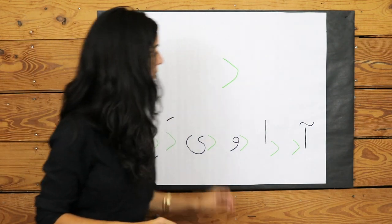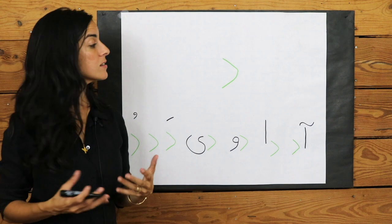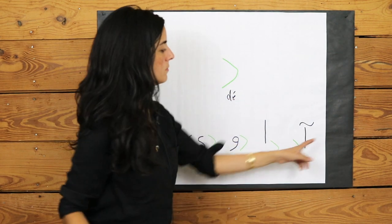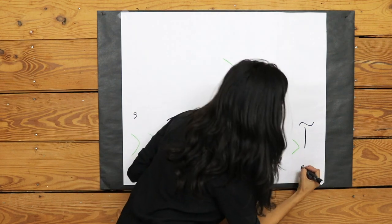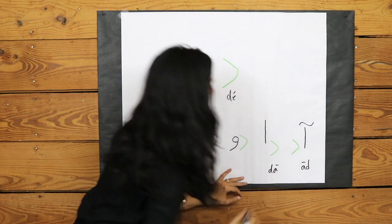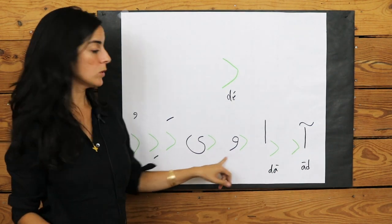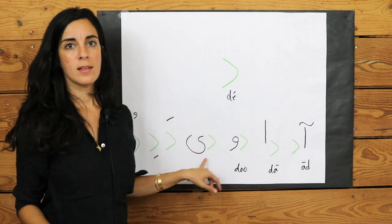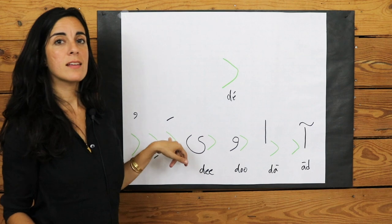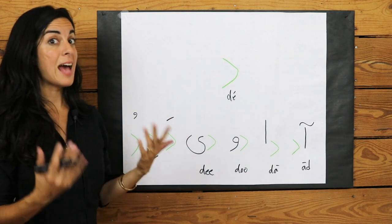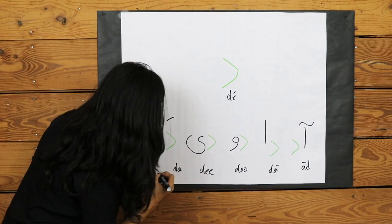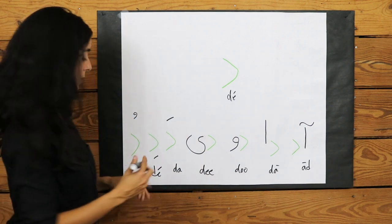So again, we're going to practice all these. I'm going to point to it. You say what the letter is and see if you got it right. So this is D. A D. AD. D. A D. D. O D. DU. D. E is DE. D with an accent above, DA. D with accent below, DE. And a D with an O above, DO.